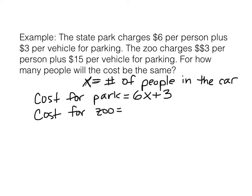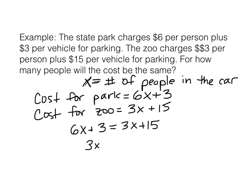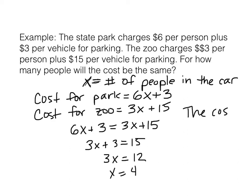And the cost for the zoo — I bet you can already figure that out — is going to be 3X plus 15. We're going to take the two and set them equal to one another. So we take 6X plus 3 (cost for the park) and set it equal to 3X plus 15 (cost for the zoo). That's a simple equation to solve. You should get down to 3X plus 3 equals 15, then 3X equals 12, which means X equals 4. So the cost is equal for 4 people. You should write it in a sentence.